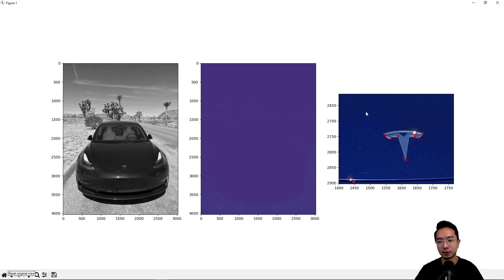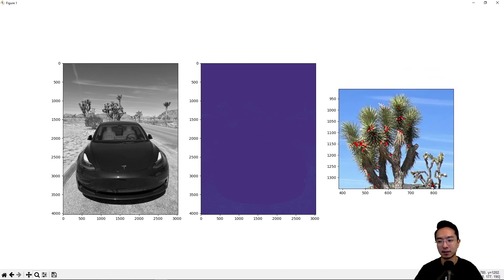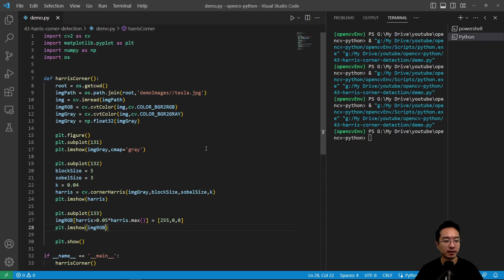And if you look back in some of the trees, you can see that it has identified some of these areas as also corners. So that's the idea of Harris Corners.